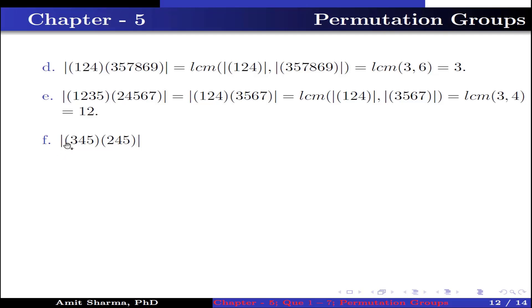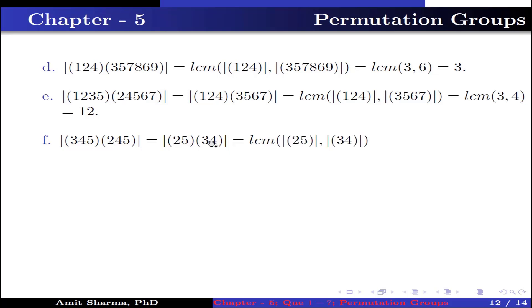Part F: order of (3 4 5)(2 4 5). Again not disjoint, so we multiply first and get (2 5)(3 5). This equals LCM of order of (2 5) and order of (3 5), which is LCM(2, 2) = 2. Therefore the order is 2.